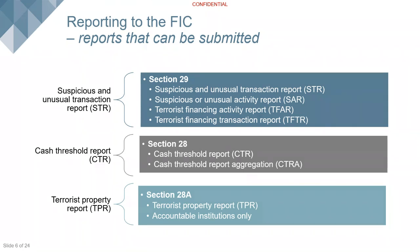When it comes to reporting, you can only report if you are registered with the FIC. The different types of reports required are under Section 29, Section 28, and Section 28A. Section 29 deals with suspicious and unusual transaction reports — where a transaction was concluded but something suspicious or unusual occurred — and suspicious or unusual activity reports, where no transaction was concluded but the activity was suspicious or unusual.